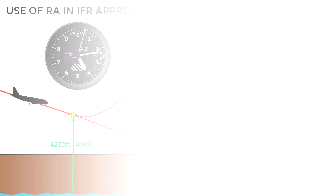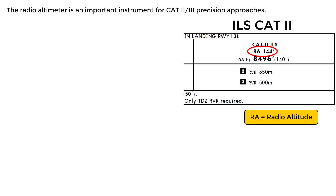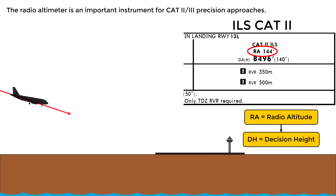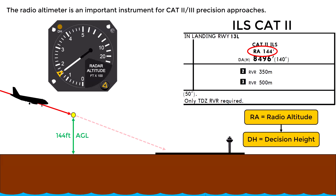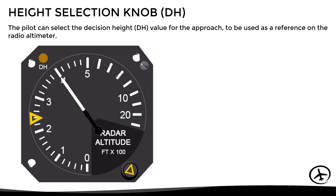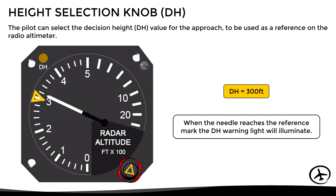However, in Category 2 and 3 approaches, the minimums are specified in terms of radio altitude, which means that instead of having a decision altitude expressed in relation to mean sea level, there is a decision height expressed in relation to the ground. In this particular procedure, when the aircraft reaches 144 feet indicated on the radio altimeter, the crew must decide whether to continue the landing or perform a missed approach. To identify more easily the exact decision height, the crew can use the height selection knob and the reference mark — for example, adjusting the reference height to 300 feet, so that the warning light illuminates when the needle reaches that mark.